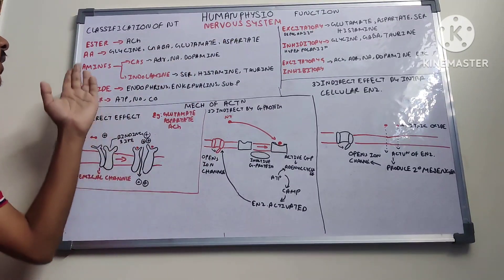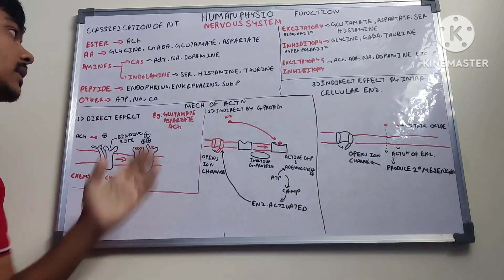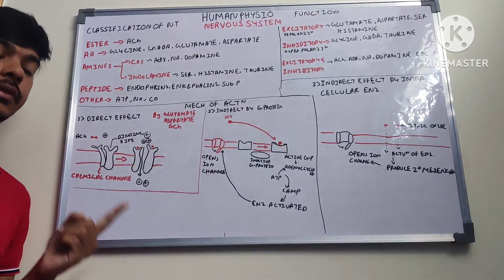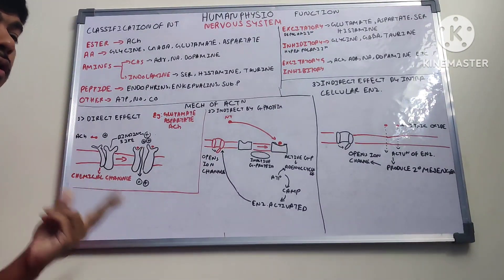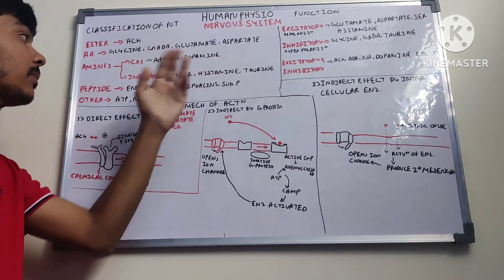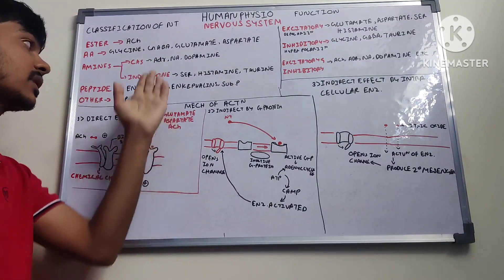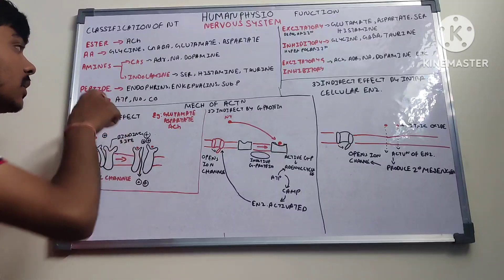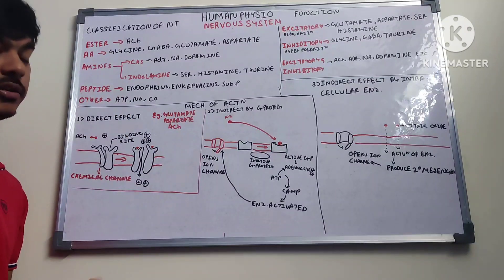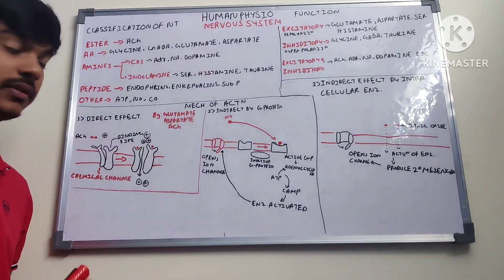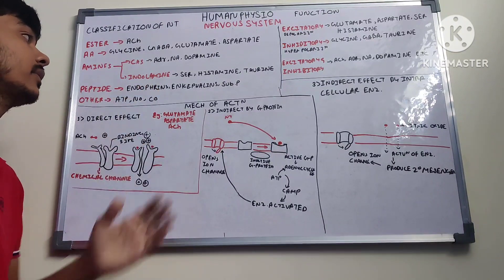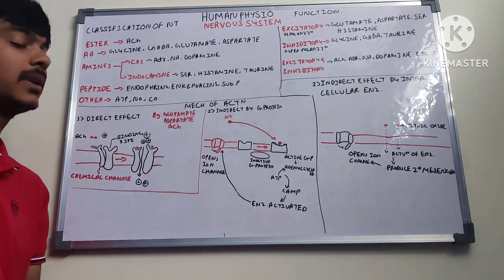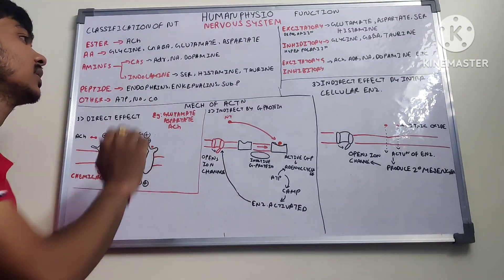Amines include catecholamines and indolamines. Catecholamines are epinephrine (adrenaline), norepinephrine (noradrenaline), and dopamine. Indolamines include serotonin, histamine, and tyramine. Peptide neurotransmitters include substance P, endorphins, and enkephalins. Other miscellaneous neurotransmitters include ATP and nitric oxide.